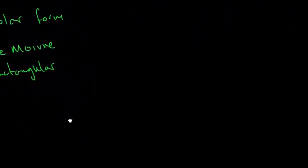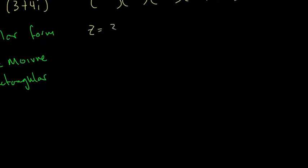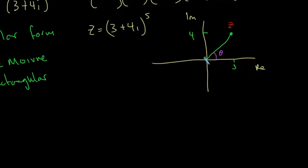Let's do the example: (3 + 4i) raised to the 5th power. Whenever we need to convert a complex number into polar form, we first need to draw the complex number on the Argand diagram. Here's my Argand diagram — this is the real axis, this is the imaginary axis. So 3 is on the real axis and 4 is on the imaginary axis — that's where my complex number Z is lying. The angle I need to calculate is θ.